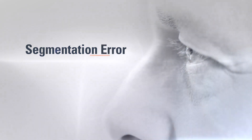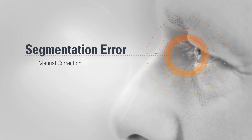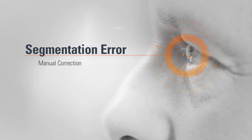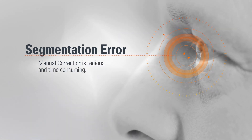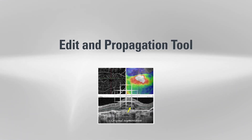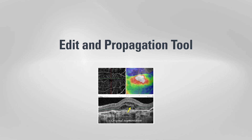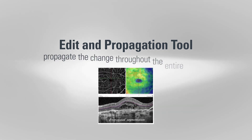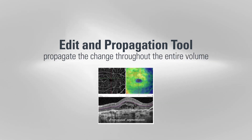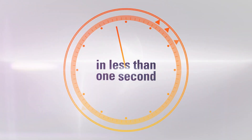Segmentation error is another challenge, but manual correction of this error B-scan by B-scan can be tedious and time consuming. With the new edit and propagation tool, users can quickly edit the segmentation in one B-scan and propagate the change throughout the entire volume in less than one second.